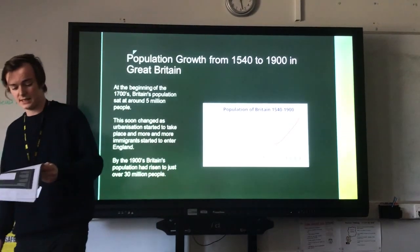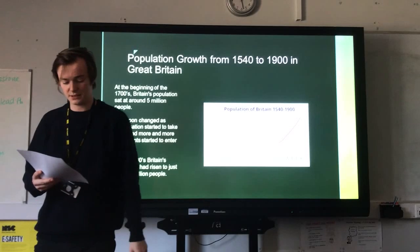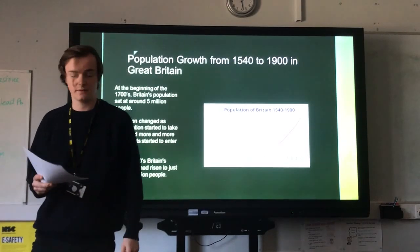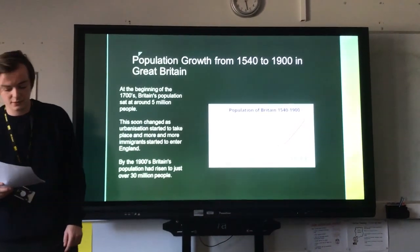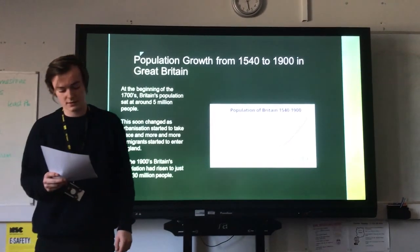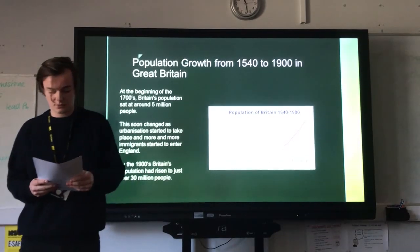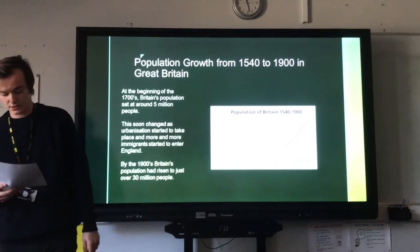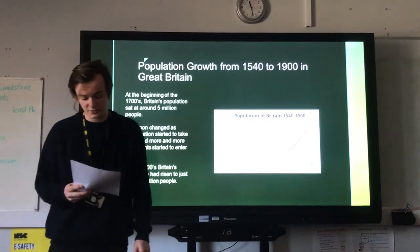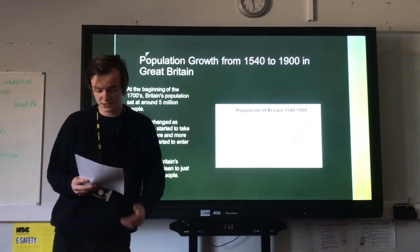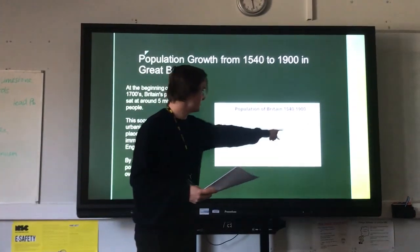Until the 1720s, England's population growth had been held back due to periodic harvest failures and by diseases such as influenza and smallpox. By the beginning of the 1800s, the population had increased by 2 million, and then by the end of the 1800s, we see the population has risen to just above 30 million people.